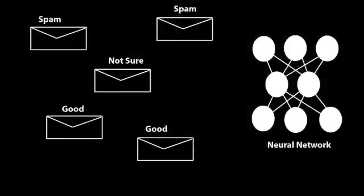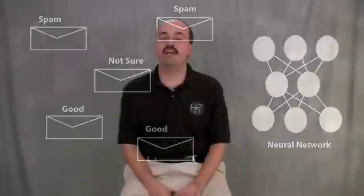First, classification. Classification is how a neural network breaks things into groups. One very common application of this is spam detection. Emails, like you see here, can be grouped into several groups — obvious spam, potential spam, and good emails. The neural network learns from incoming emails and accepts training from the user as to when the neural network gets things right and when it gets things wrong.